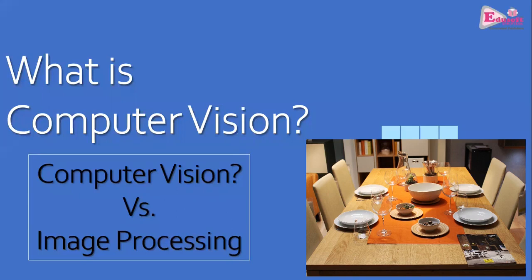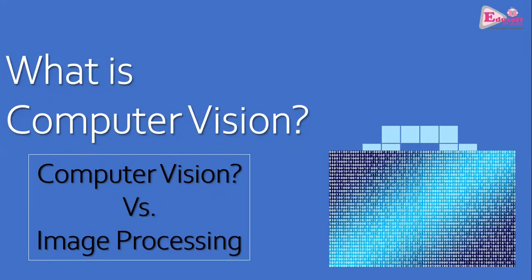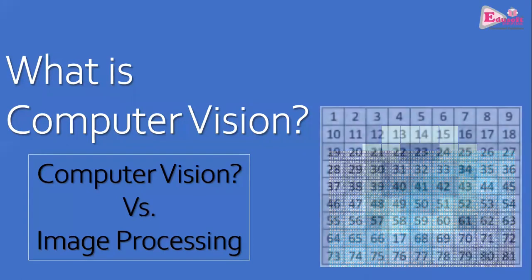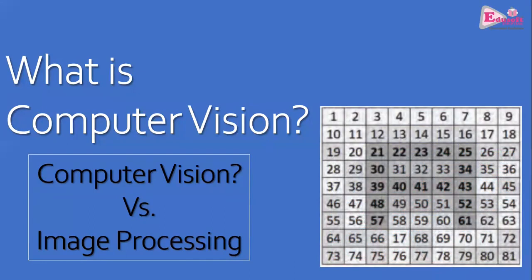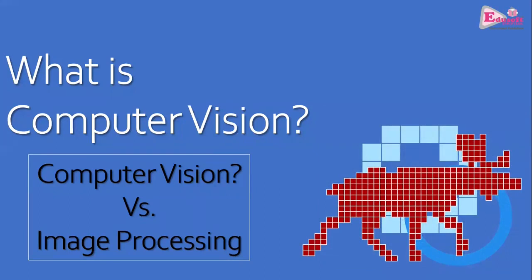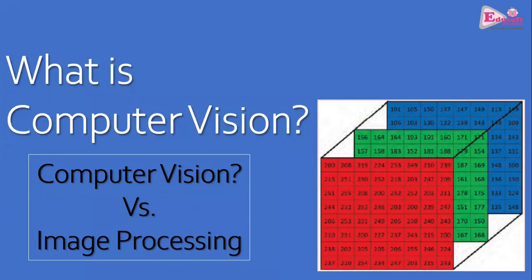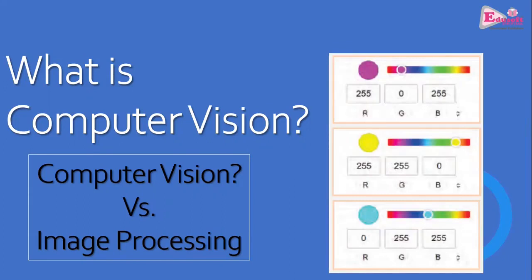Machines look at an image as a two-dimensional arrangement of height and width, in the form of pixels — the picture element, the smallest dot in the image. Every pixel is composed of three basic colors: red, green, and blue — that's the RGB model. Various intensities of red, green, and blue give the color to each pixel.